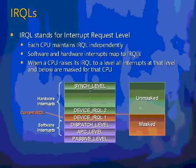When an interrupt comes in from a particular device, it raises the IRQL of that processor up to the level defined for that device. That causes interrupts from other devices at that level and below, including software interrupts, to be masked off until this first interrupt has finished being serviced.